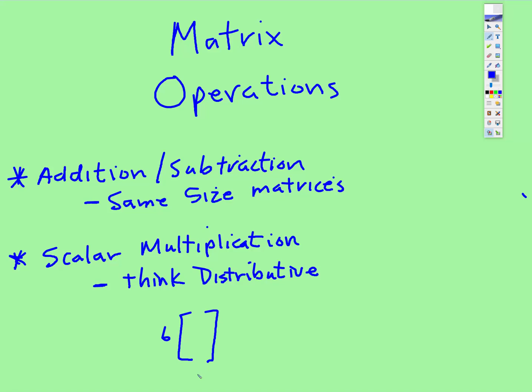So if you had a matrix that looked like this, say one, two, negative five, you would just do the distributive and the matrix would stay the same size.